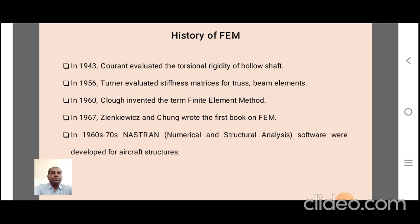History of finite element method: In 1943, Courant evaluated the torsional rigidity of a hollow shaft using triangular elements to find the solution. In 1956, Turner evaluated stiffness matrices for truss and beam elements. Around 1960, Clough coined the term 'finite element method' for approximation methods. In 1967, Zienkiewicz and Chung wrote the first book on finite element method. In the range of 1960 to 1970, NASTRAN — Numerical Structural Analysis — software was developed for aircraft structures.